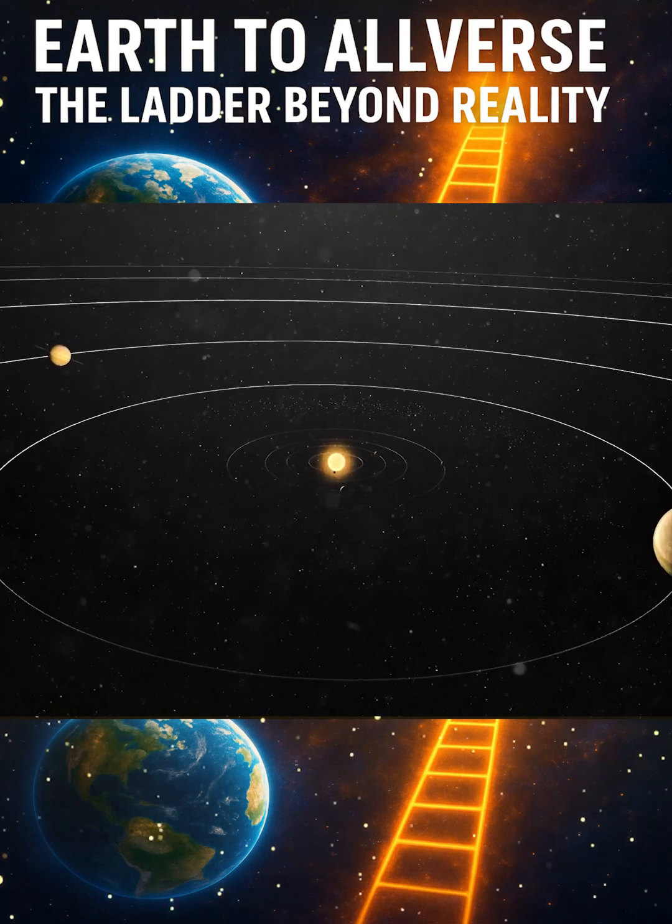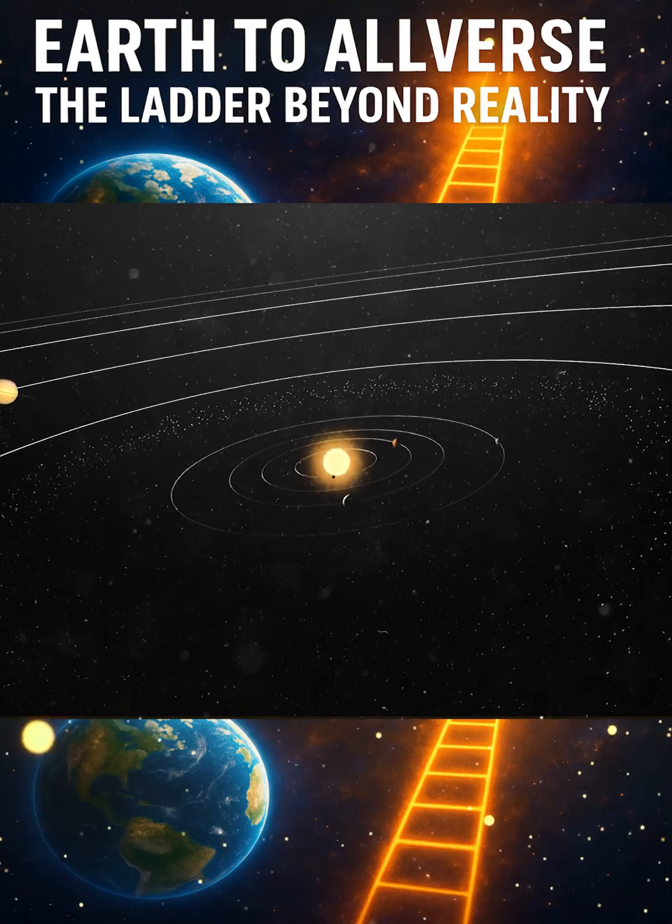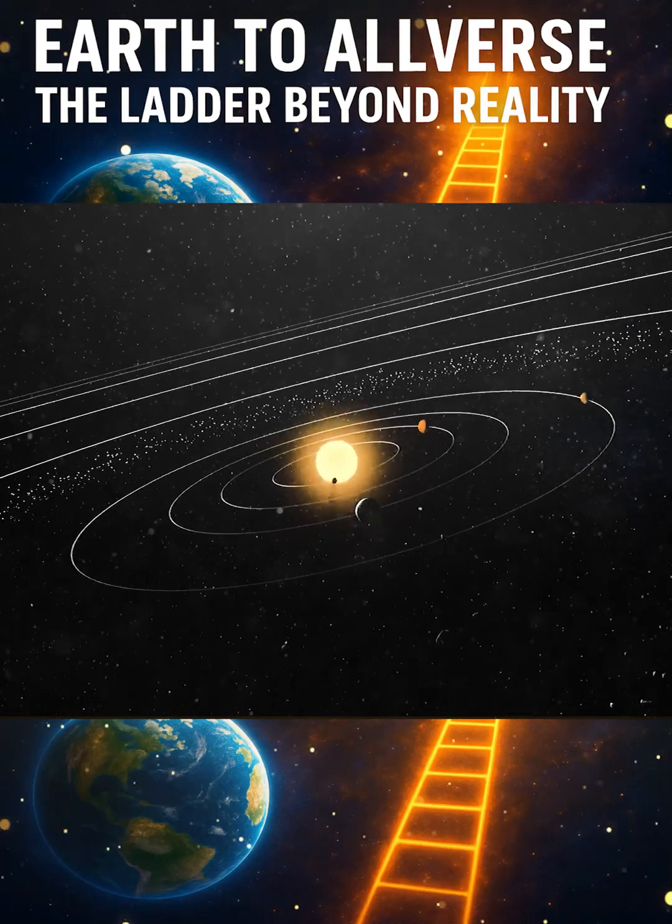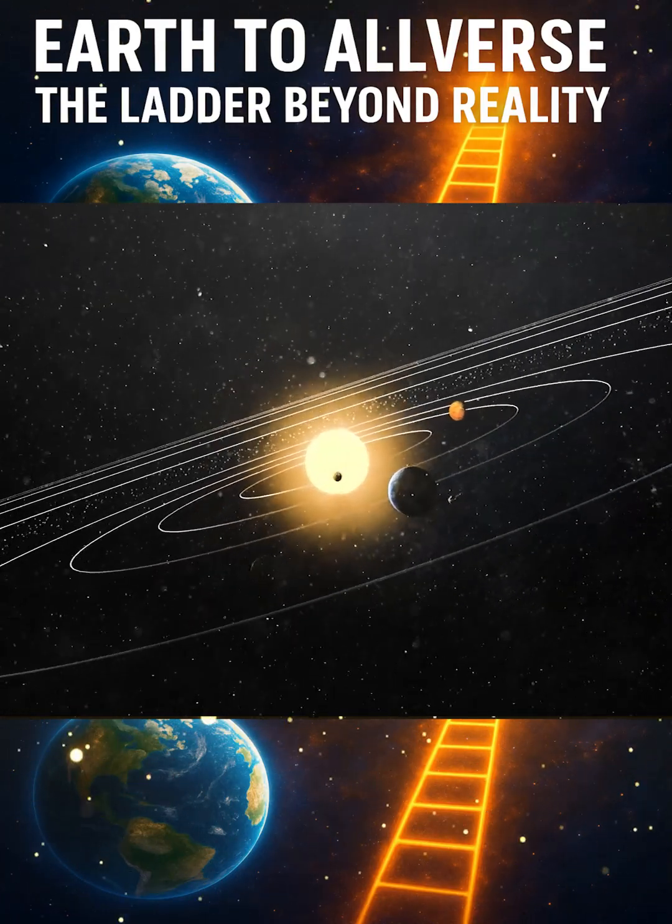Our solar system is the child of a collapsed star. From cosmic death came rebirth: dust, fire, and planets.